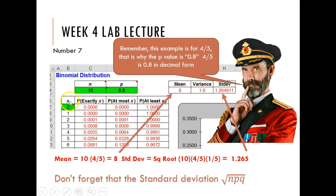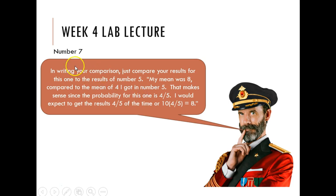If I wanted to do this in my binomial distribution calculator, I would just type in equals four-fifths. I'll show you in just a second. And then it will give me the mean and the standard deviation. In writing my comparison here, I would just say my mean was eight compared to the mean of four I got in number five. This is not what you write, because you've got a different problem. I just said that would make sense, because the probability for this one is four-fifths. I would expect to get the results four-fifths of the time, or ten times four-fifths is equal to eight.